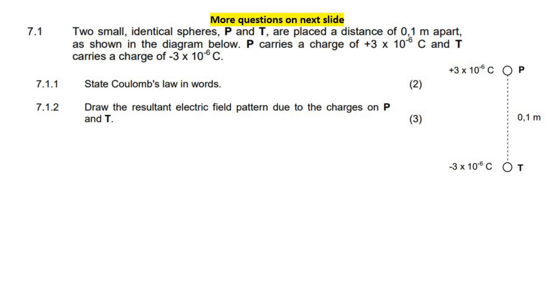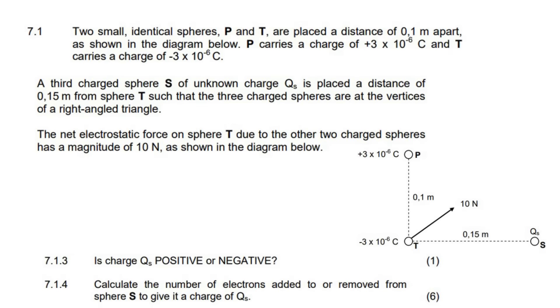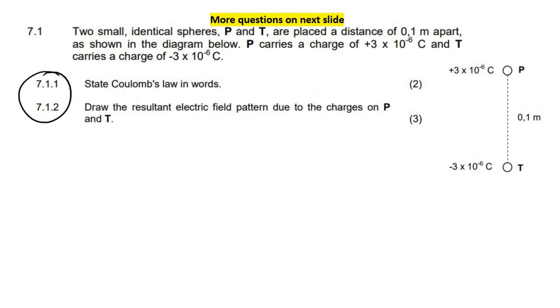There will be more questions after this. So we've got these two over here and then these two over here. It says two small identical spheres, P and T, are placed a distance of 0.1 meters apart as shown in the diagram. P has a charge of positive 3×10^-6, whereas this one is just negative 3×10^-6.